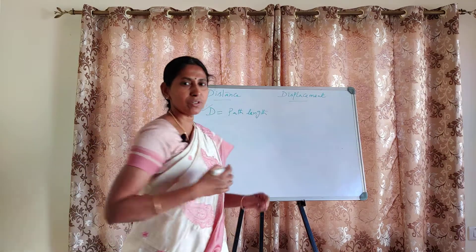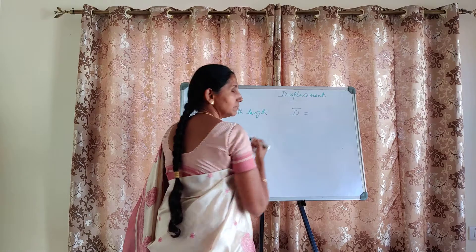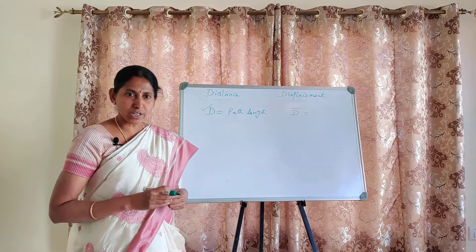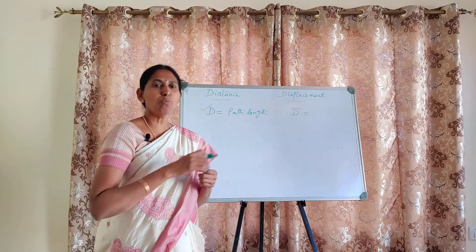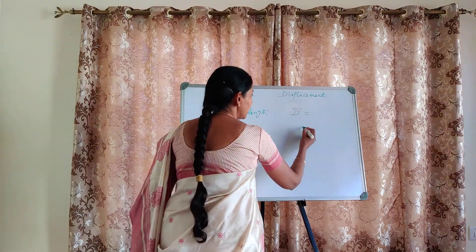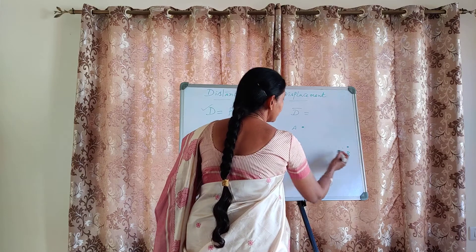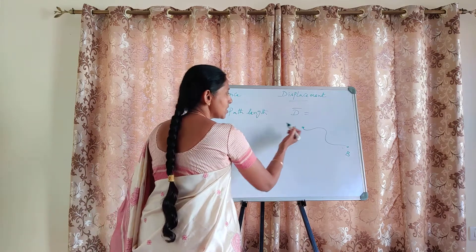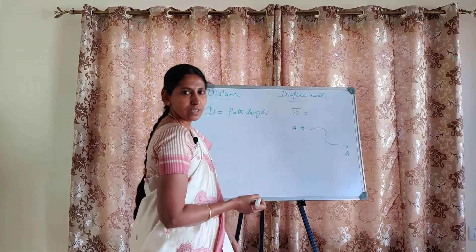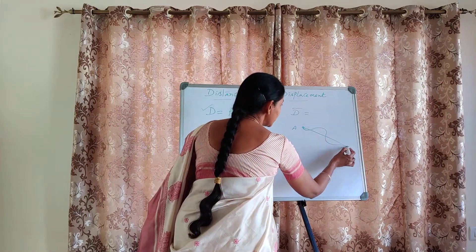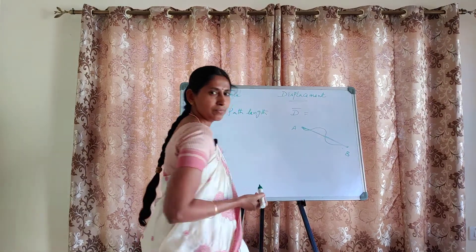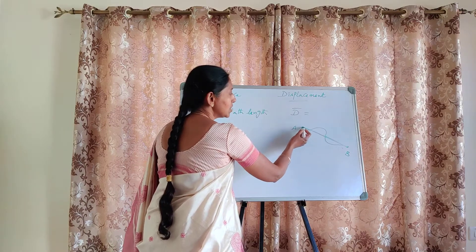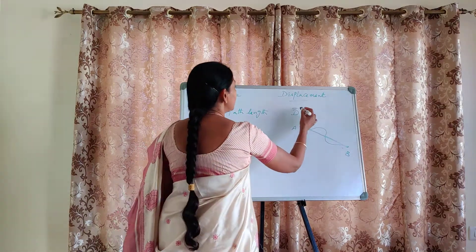What is displacement? If you consider only the starting point and ending point — where you have started, where you have reached — between those two points, let us suppose you have started at point A and gone to another point B. Whatever may be the path, we are not considering the entire path here. We are considering only the starting point and ending point. If you imagine a straight path between these two points, the length of that particular path — the shortest distance between A and B — is nothing but displacement.